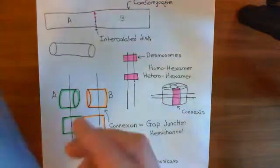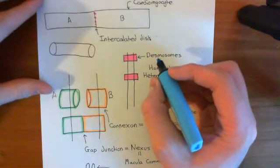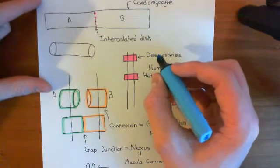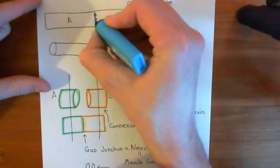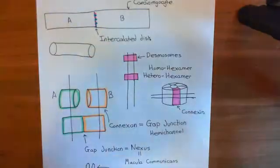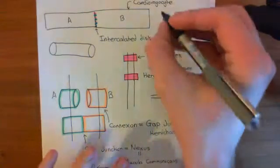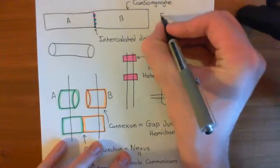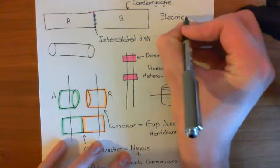Let's denote the gap junctions now by a blue dot. So as well as the desmosomes, which are a structural link between cardiomyocyte A and cardiomyocyte B, you also have these gap junctions, which I'll show in blue, which are an electrical link between cardiomyocyte A and cardiomyocyte B. They're often referred to as electrical windows between the two cells.